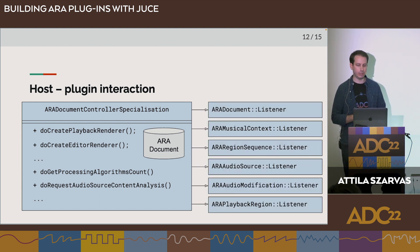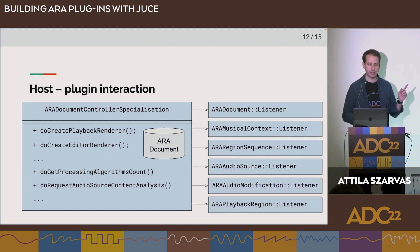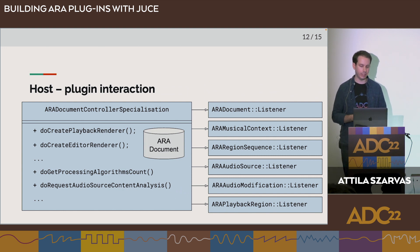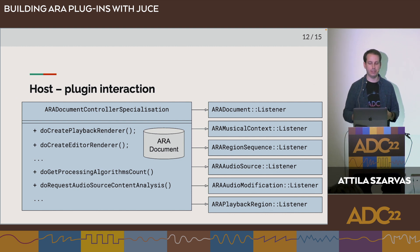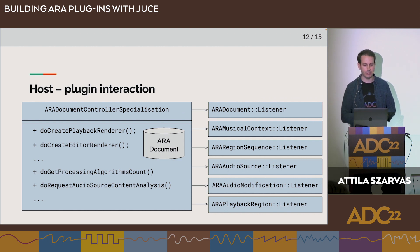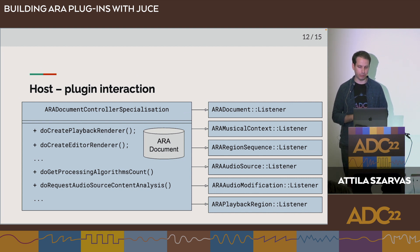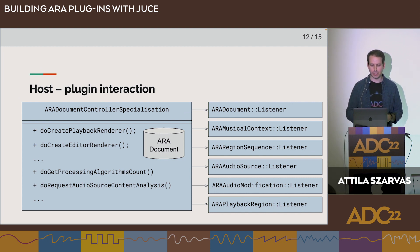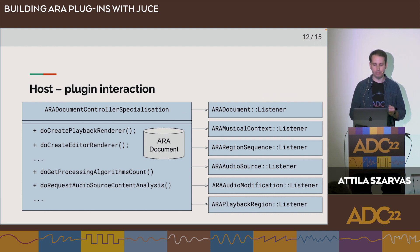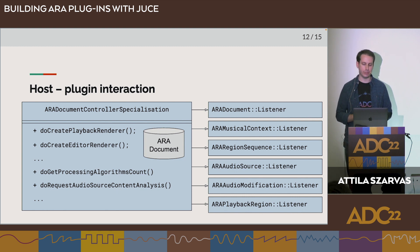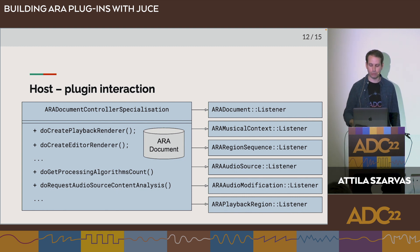There is also an exhaustive set of listener classes that the document controller specialisation inherits from. By overloading functions in these parent classes, you will be notified of all edits the DAW has made to the ARA document. You can inherit from these listeners with your own custom classes and attach them to a particular region sequence or audio source — mirroring the typical listener pattern seen in JUICE.